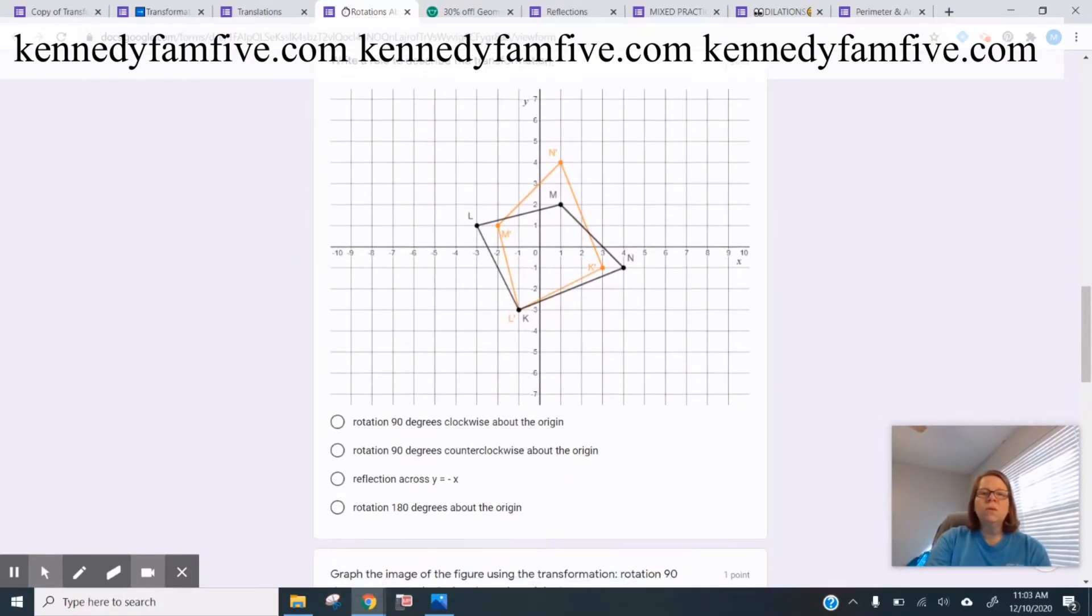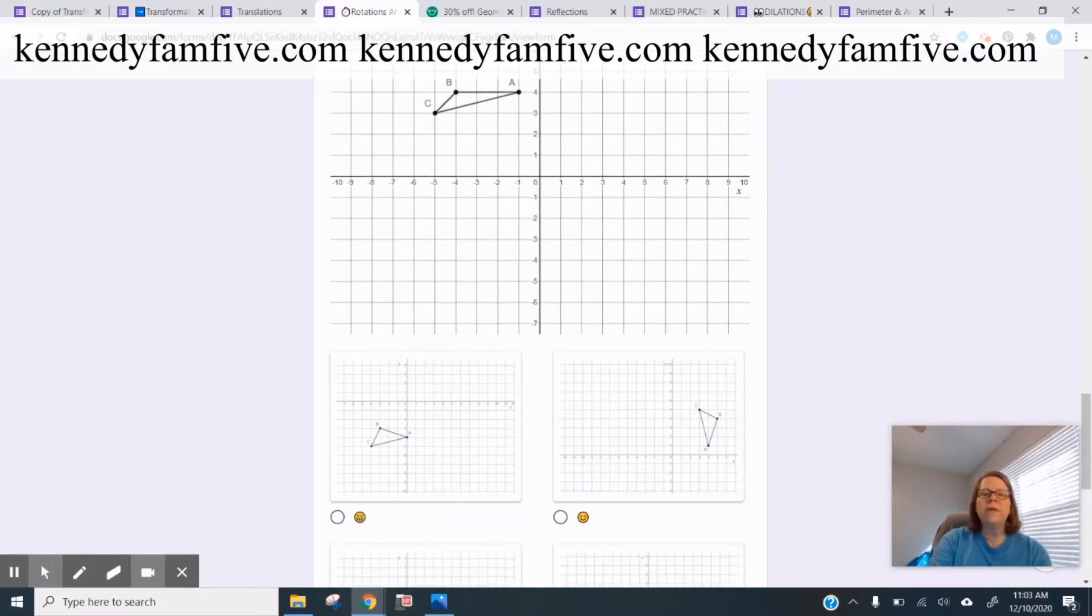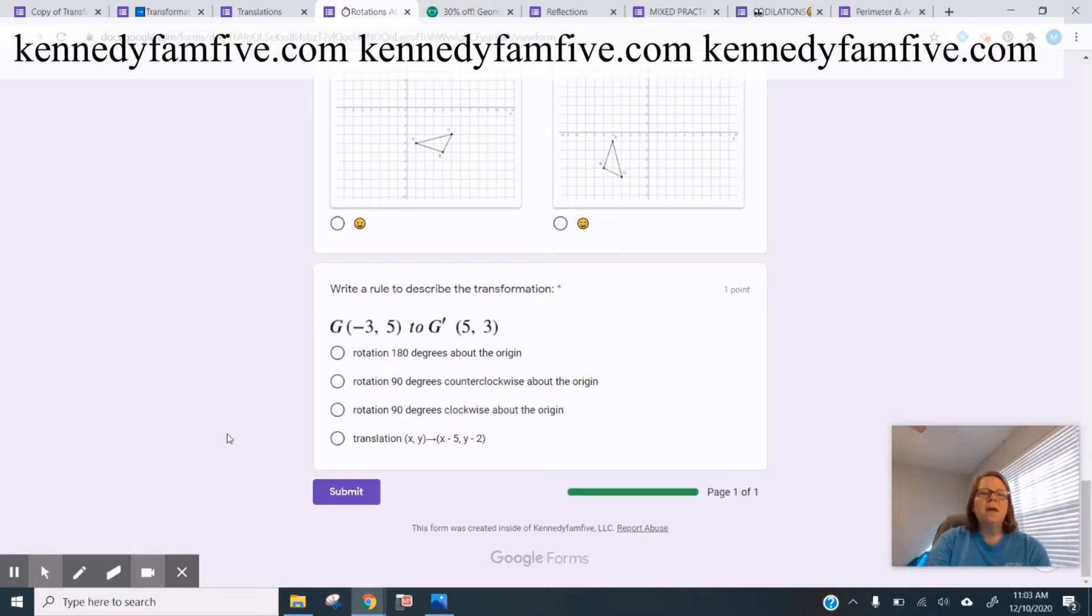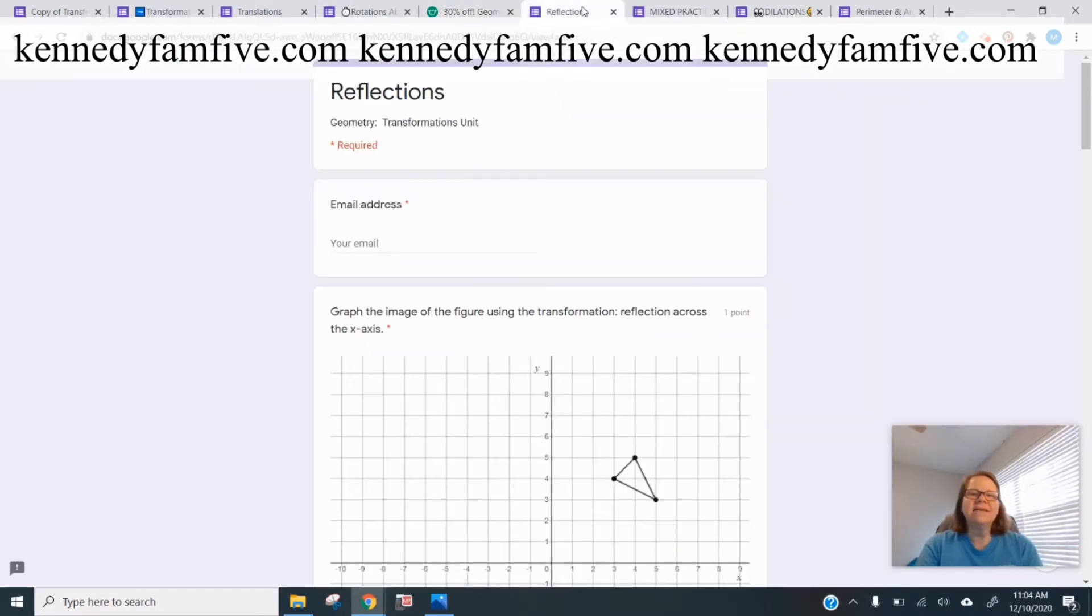Write a rule from a graph of a pre-image and an image. And then one more where they graph. And write another rule from coordinate points. So this is what it looks like on Teachers Pay Teachers. This is the whole bundle of all seven assessments. I'll put the link to this in the description.